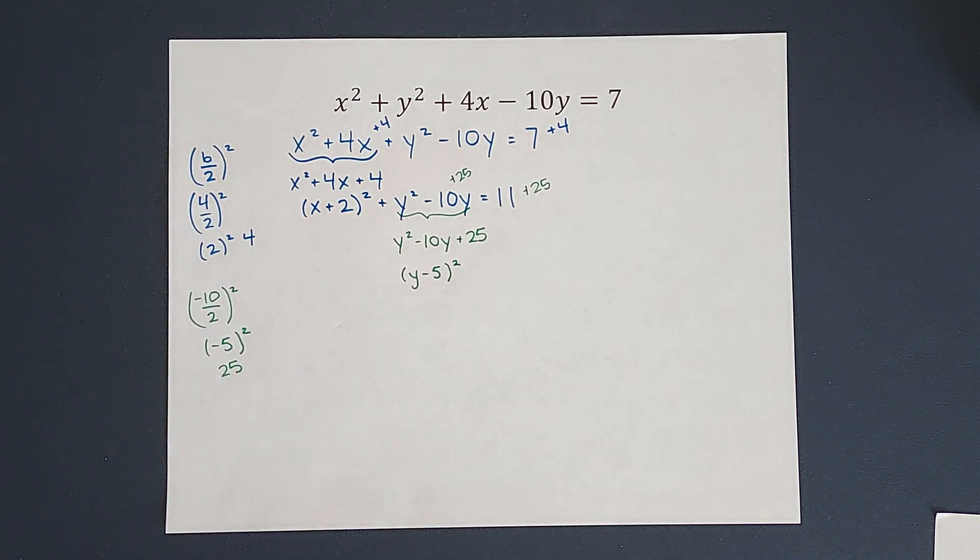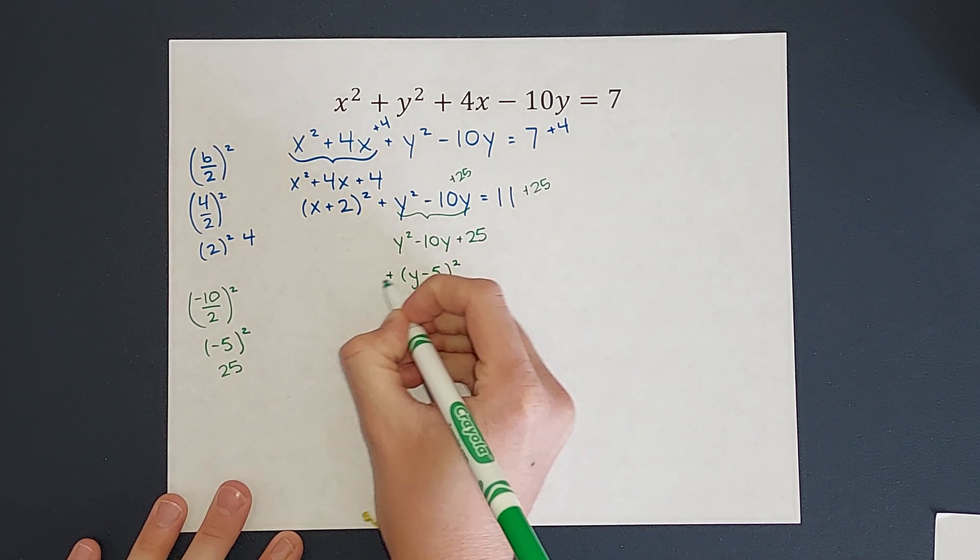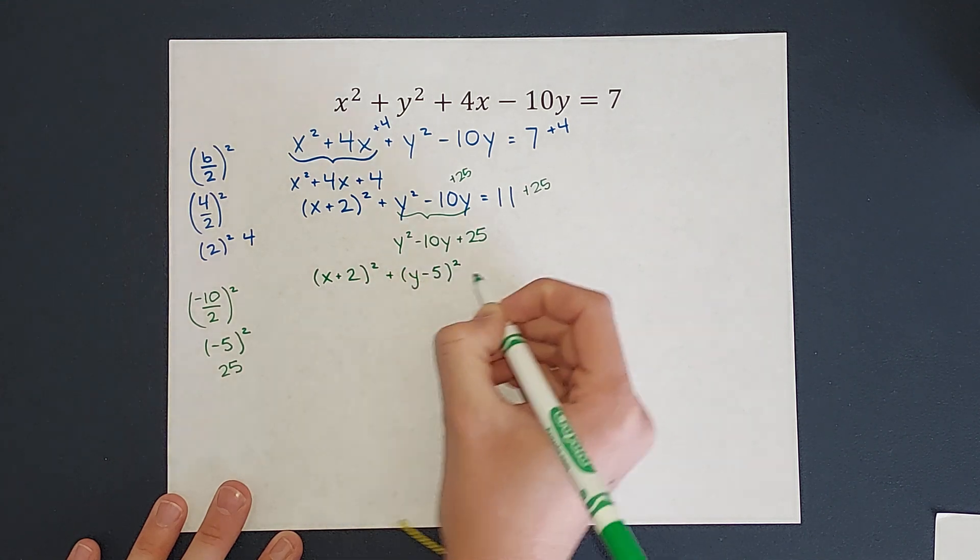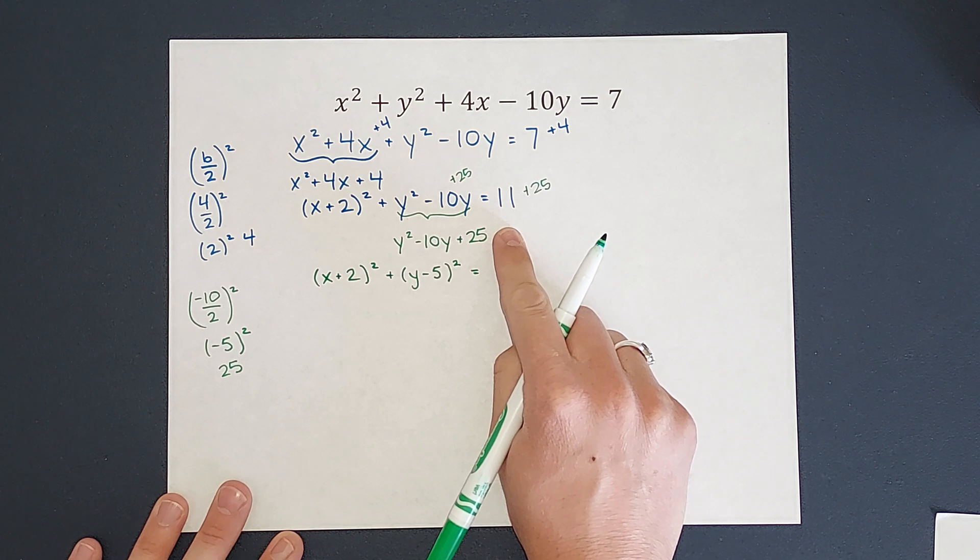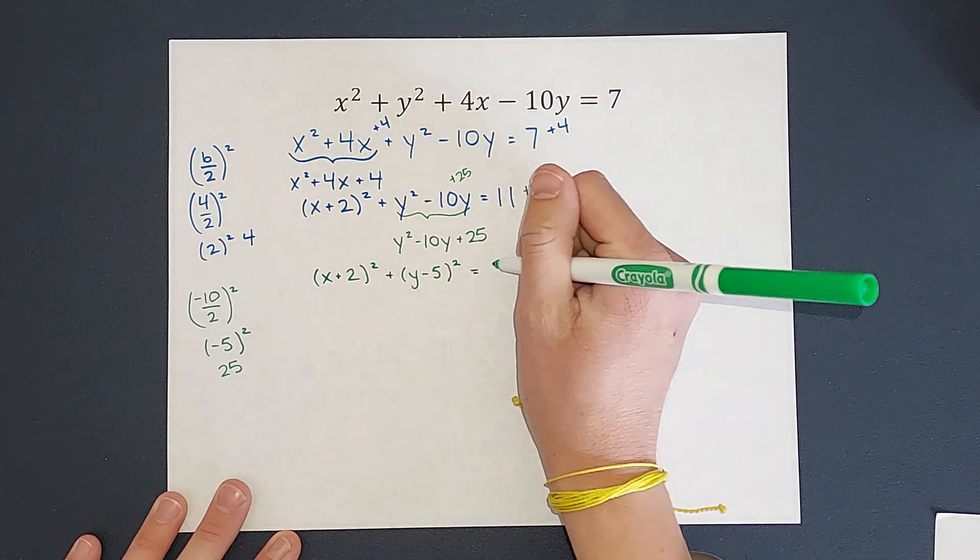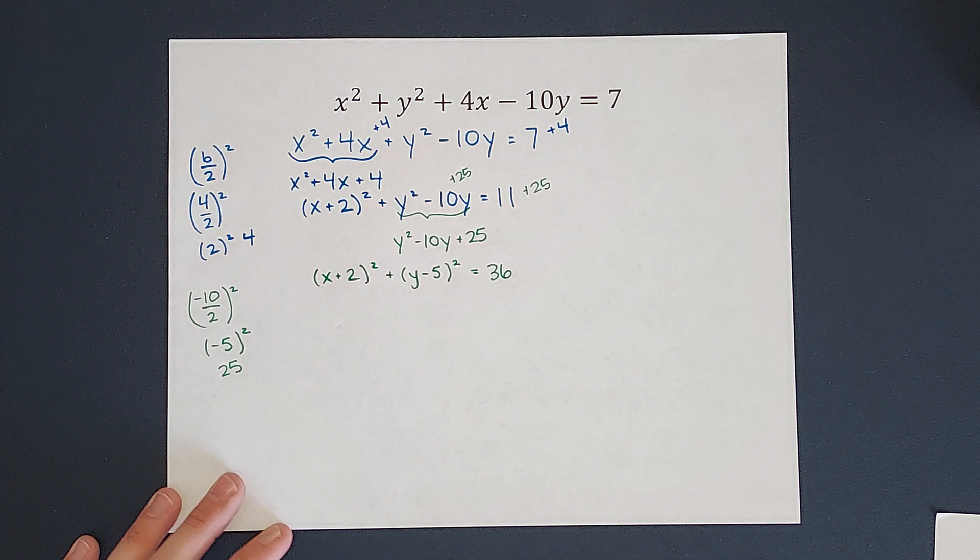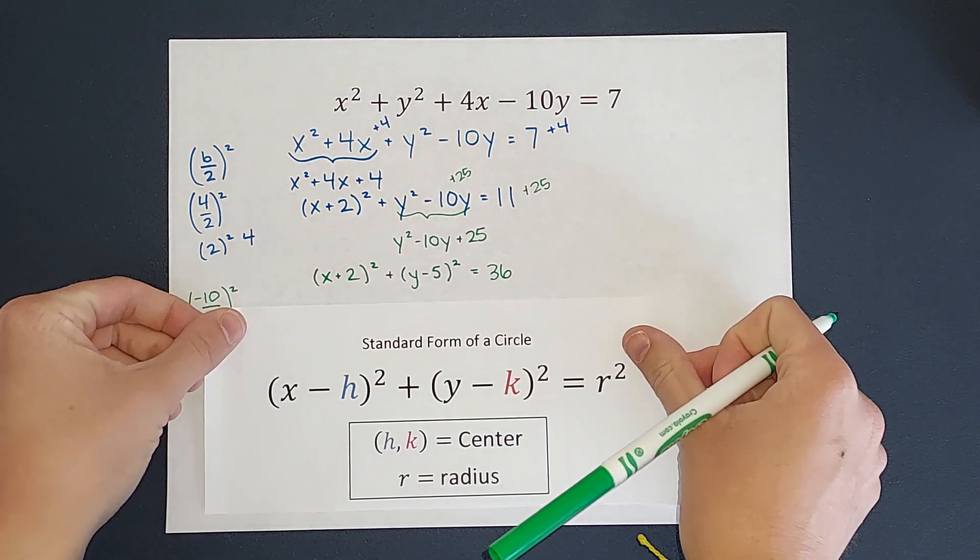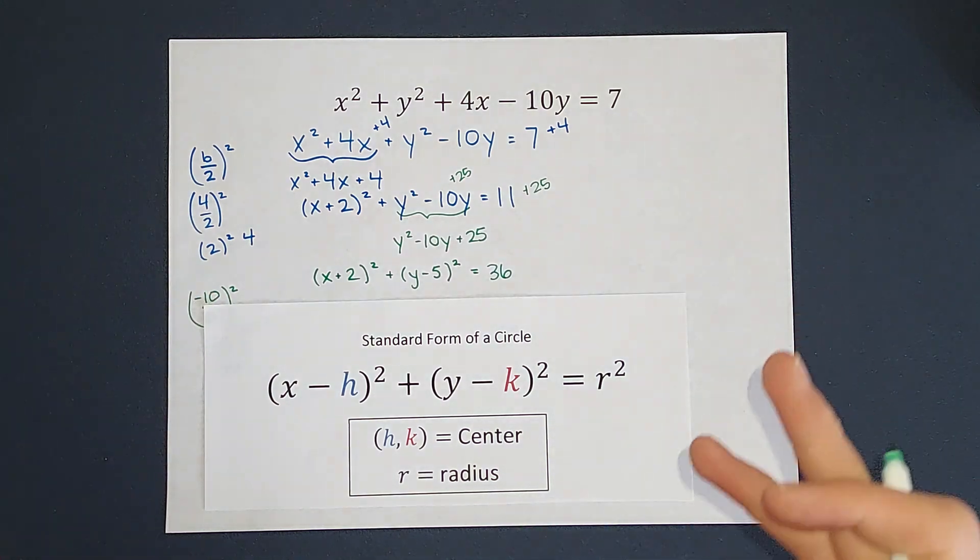Now I just got to rewrite everything else. We still have the plus x plus 2 squared, and we are equal to 11 plus 25, which gives me 36. Okay, all right, now is that looking more like we want it to look? Yes, it's matching up now, right?